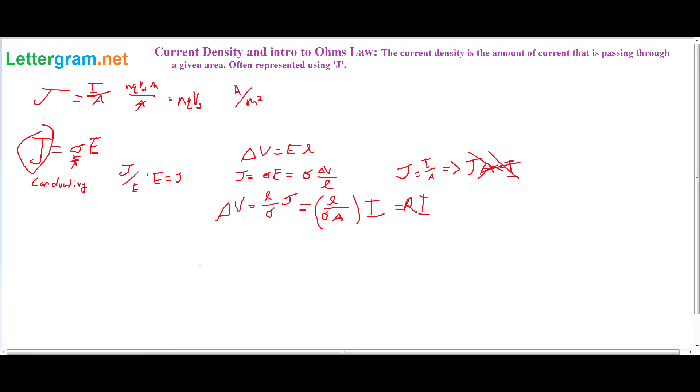And that is equal to RI. So now we have the change in potential across a conductor, or a wire, is equal to the resistance times I. Resistance is in units of Ohms. And I'll go more into that later.